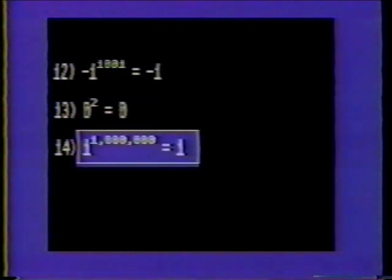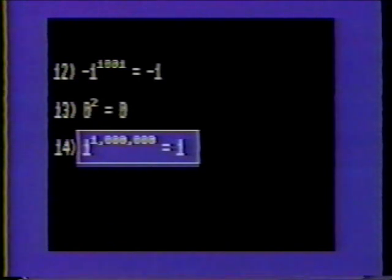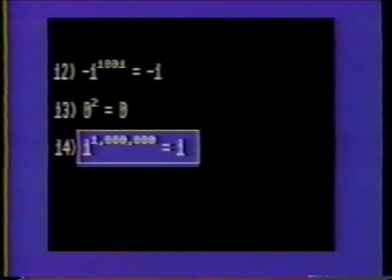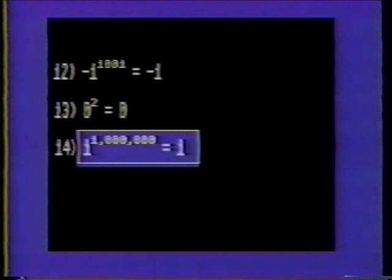Number fourteen: one raised to the one-millionth power means multiply one by itself one million times. We know that no matter how many times we multiply one by itself, the answer is always one. Thus, the final solution is one.